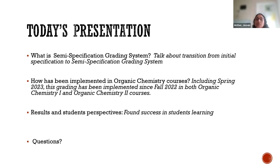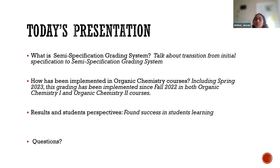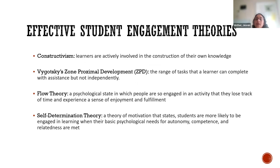From fall 2022 up to this spring 2024, except the summer in between, I have implemented this grading system in my organic chemistry 1 and organic chemistry 2. You will see that students have been motivated to learn better. I did have some survey which I will share with you at the end of this presentation. I also will share the comparison of the traditional grading system outcome and the specification or semi-specification grading outcome. At the end, I will ask you to give me some feedback, and if you find anything that I can do differently, I will absolutely take it to heart and work on it.